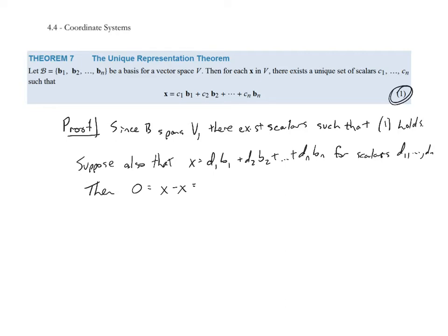That is equal to—I can take those two linear combinations and rearrange them to show that (c₁ - d₁)b₁ + (c₂ - d₂)b₂ + ... + (cₙ - dₙ)bₙ. So I subtract my two x vectors, rearrange the terms, and factor out my basis vectors. That is equal to 0.